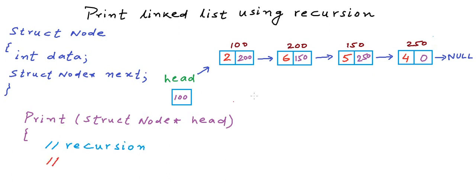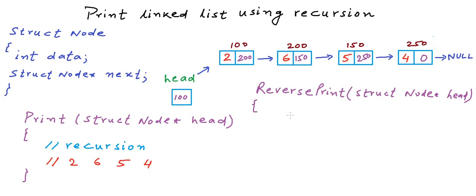For this example, if we want to print a space-separated list of all elements, the output will be something like 2 4 6 5. We also want to write another function named reverse print, which also takes the address of a node. We pass it the address of the head node and use recursion to print the elements in reversed order, so the output will be 5 6 4 2.